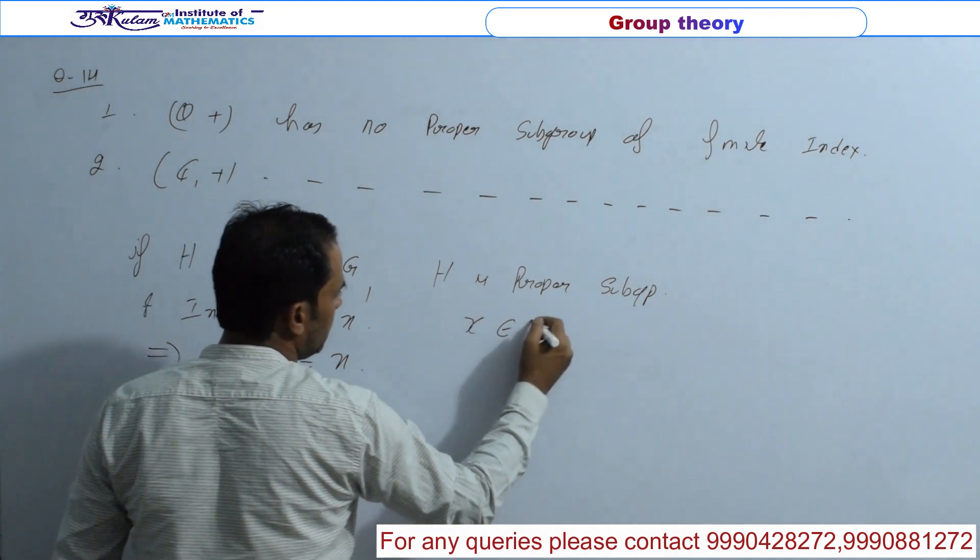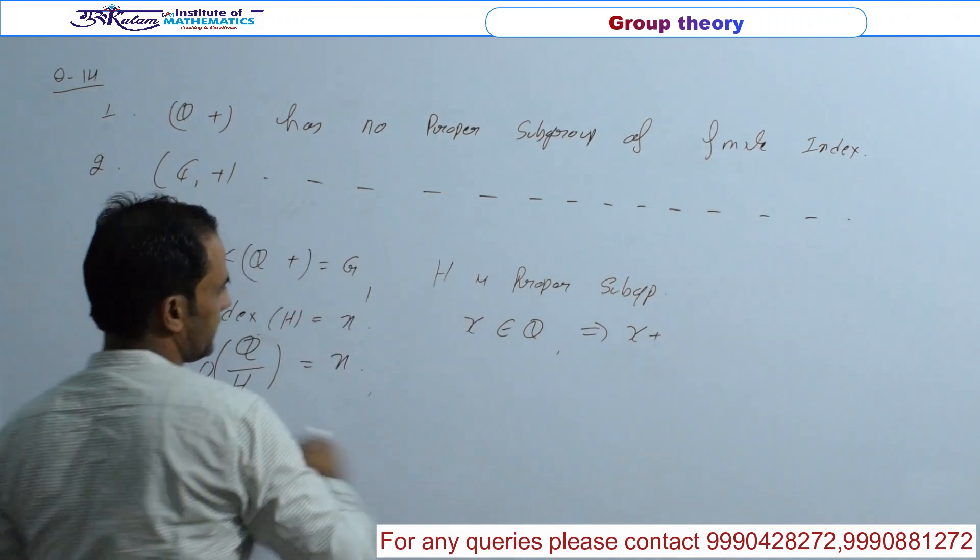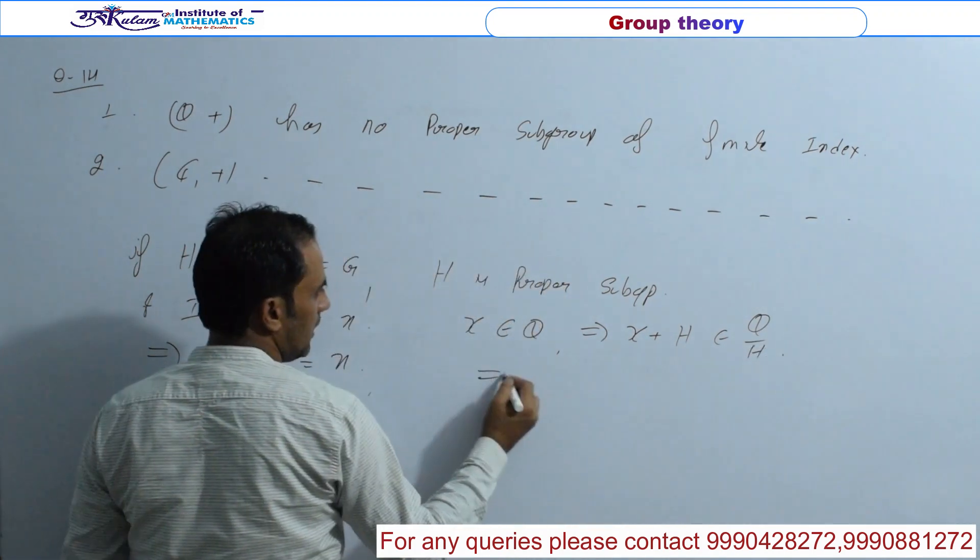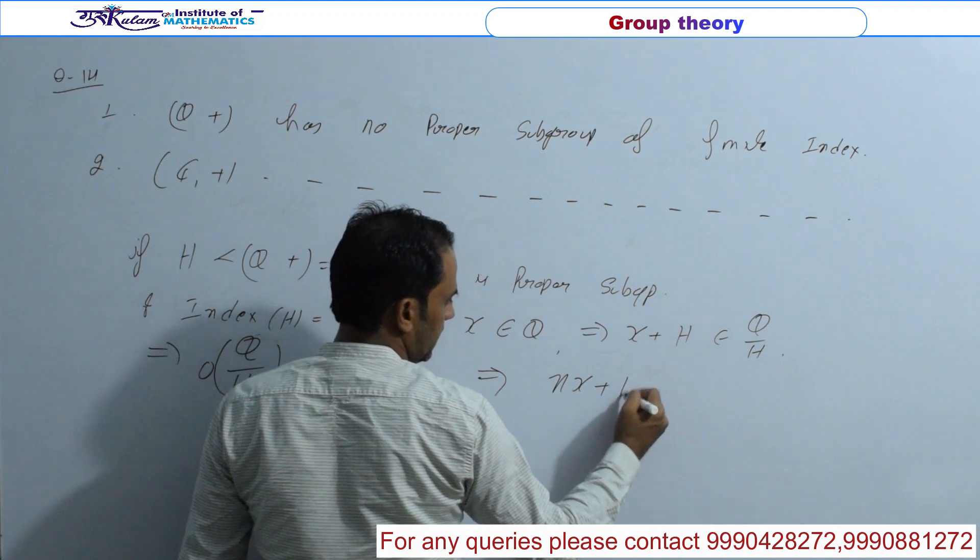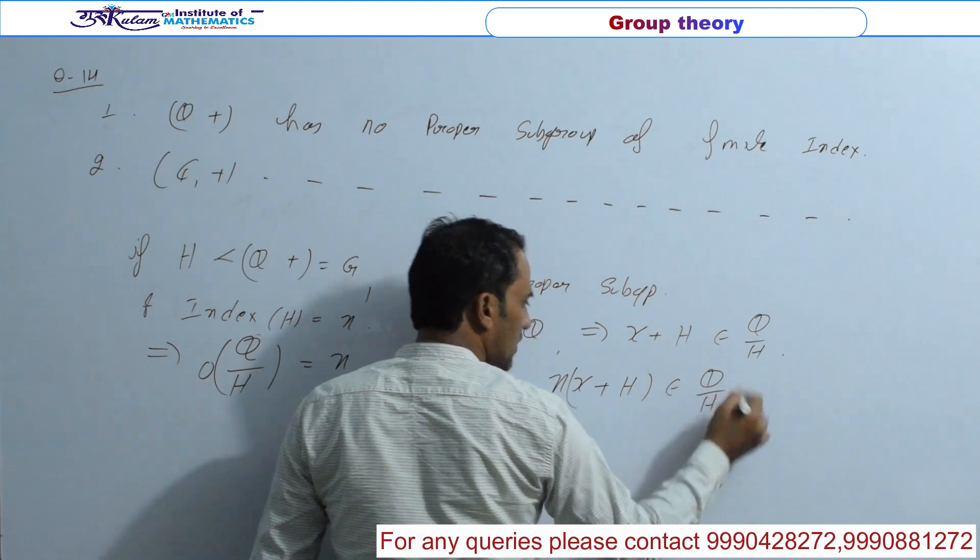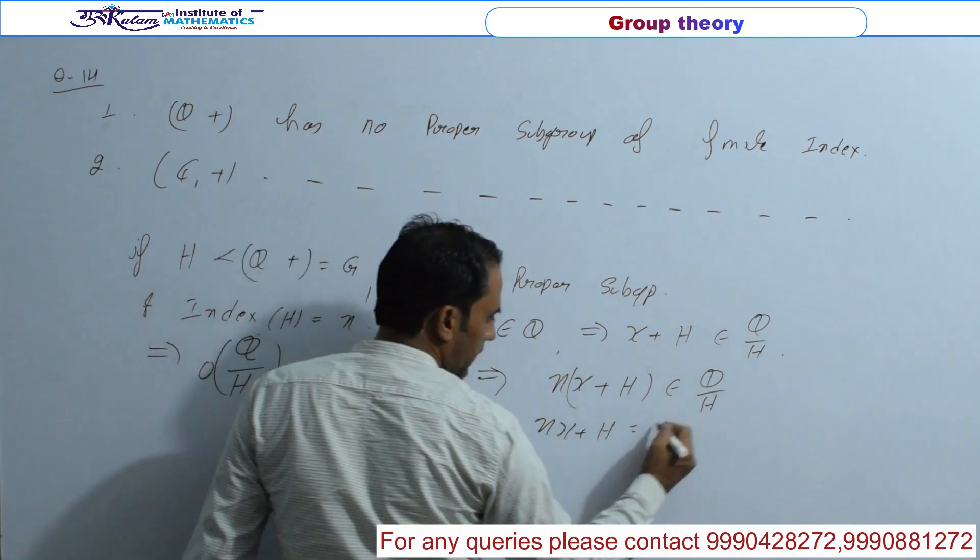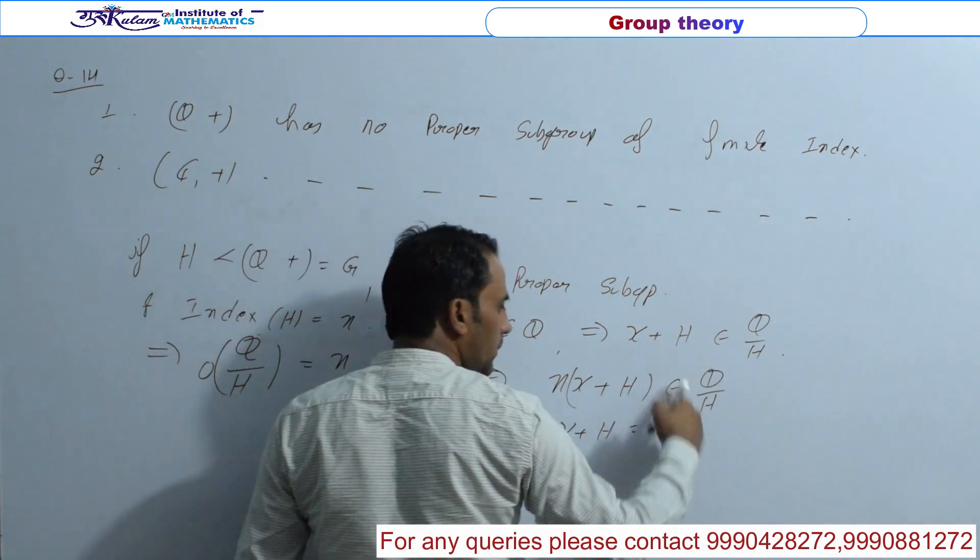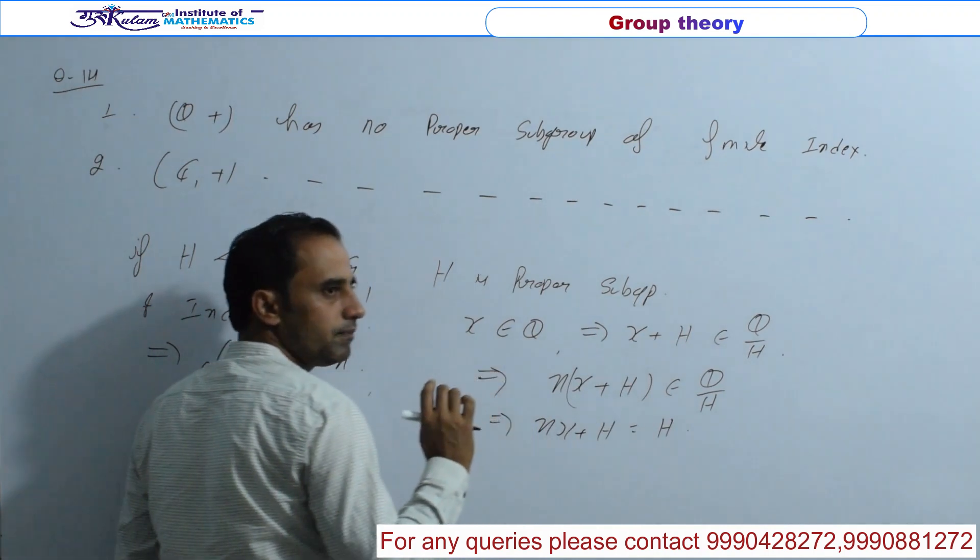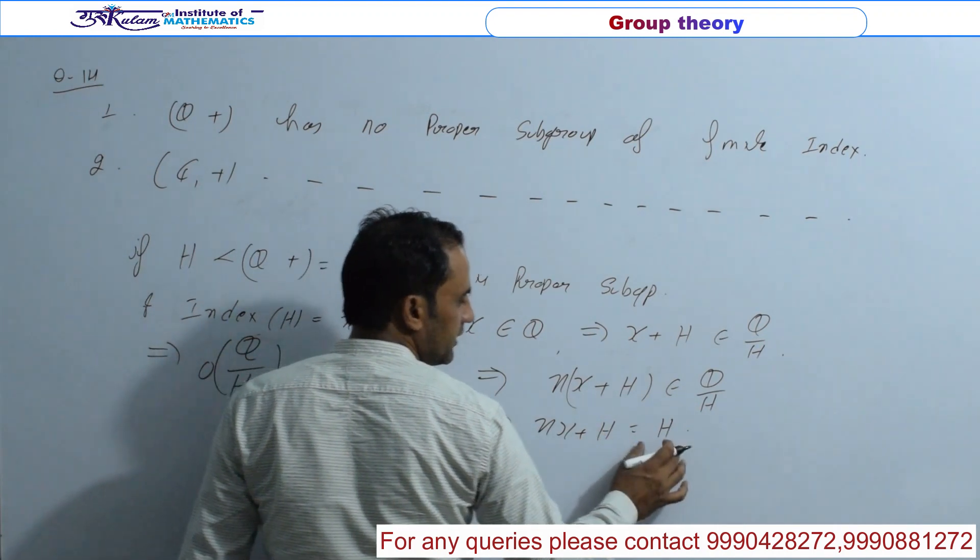अब मैं अगर कोई भी element X belongs to Q pick करता हूँ. तो this implies X plus H जो आएगा वो Q by H का element होगा. तो this implies N of X plus H, N जो natural number है, this is also belongs to Q by H. लेकिन इसका order क्या है? तो this implies NX plus H should be equal to H. क्योंकि यह order इसमें कोई भी element pick करोगे, उसका order N को divide करेगा. क्योंकि इस group का order N है. तो order of element divides order of group. यह use कर रहा हूँ.